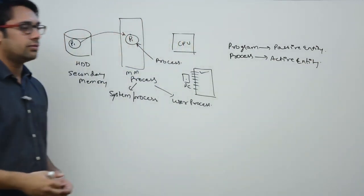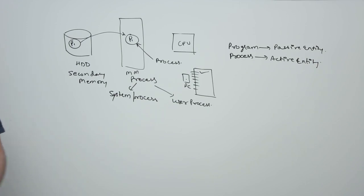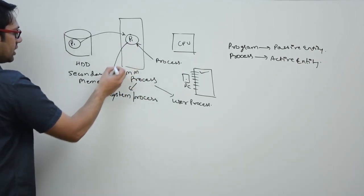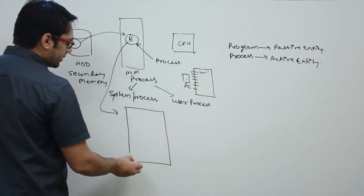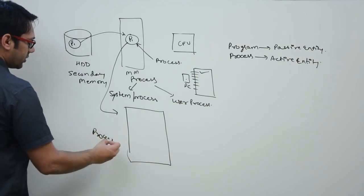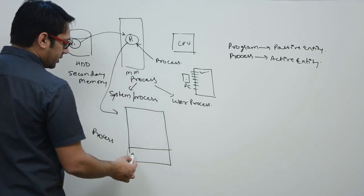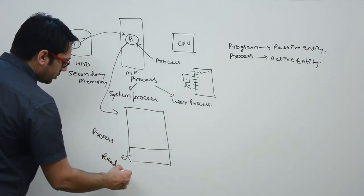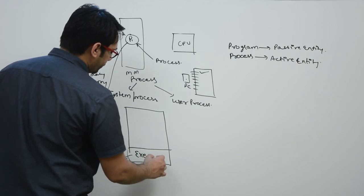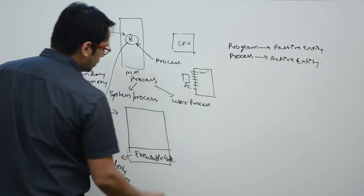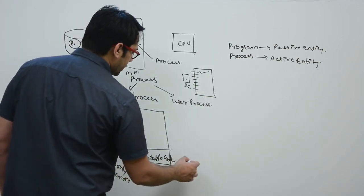A process is an active entity because it is actively running, whereas a program is not actively running at all times. A process also includes a process stack, temporary variables, data variable sections, and so on. When memory is allocated to a process, one section is a read-only memory area where the executable code is stored.